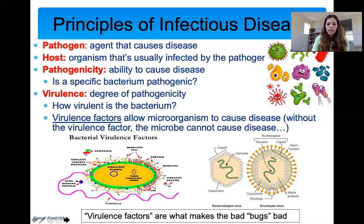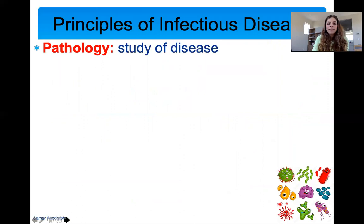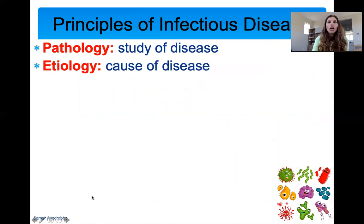More terms: pathology is the study of disease. Etiology is the cause of disease. So the cause of COVID-19 is SARS-CoV-2 — that's the etiology.